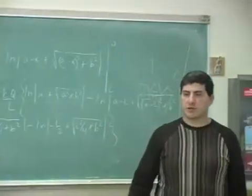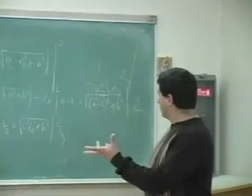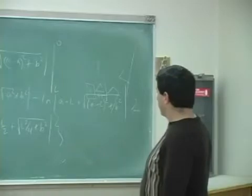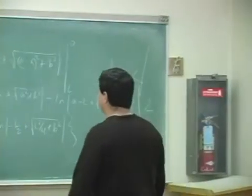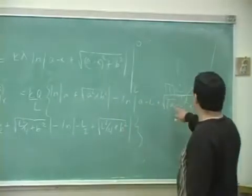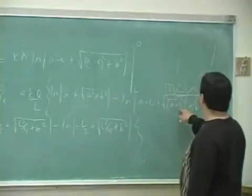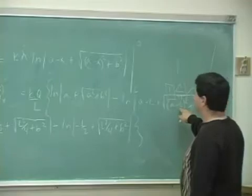And then you could put in what the numbers are. It doesn't really simplify. l over 2 minus l, that's l squared over 4.